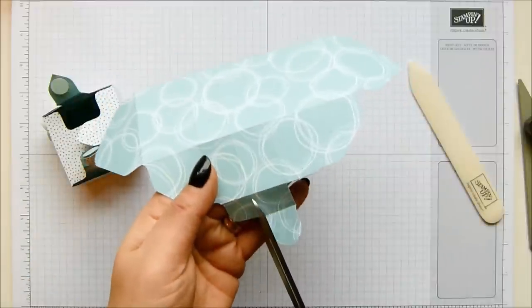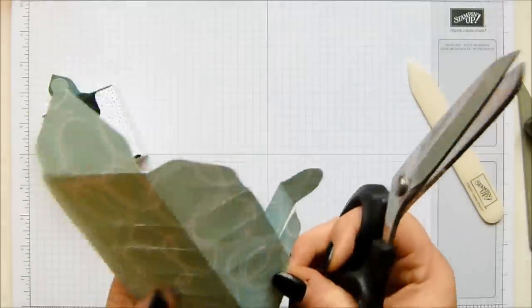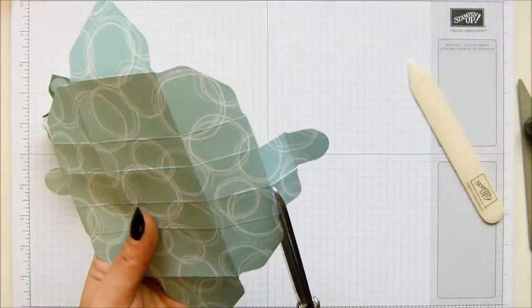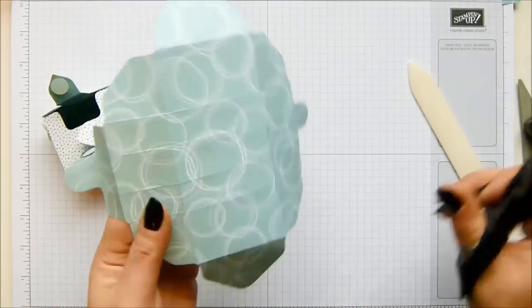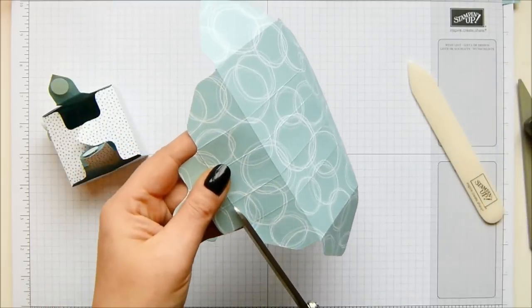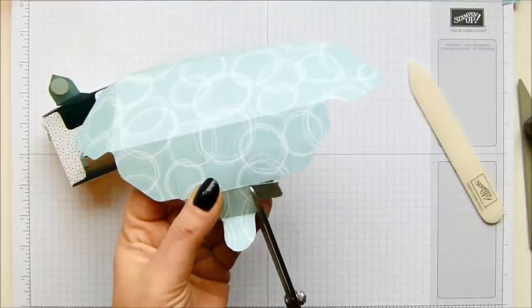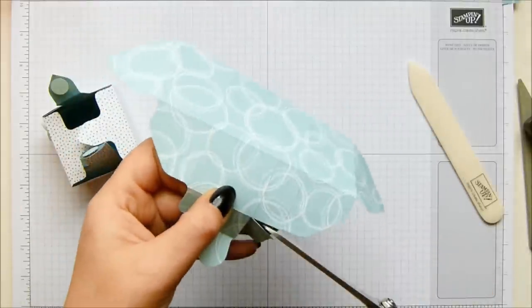So you do that on both sides so you get rid of all of those little tiny squares. Oh, let's just nick that properly.